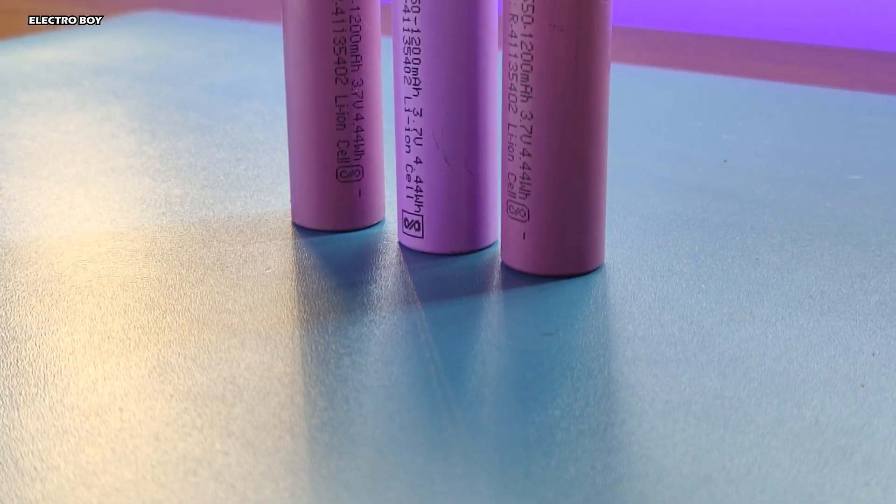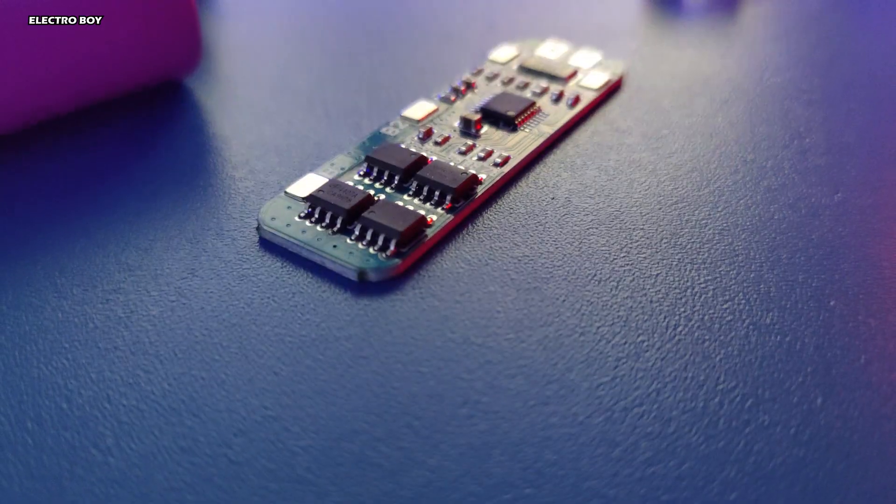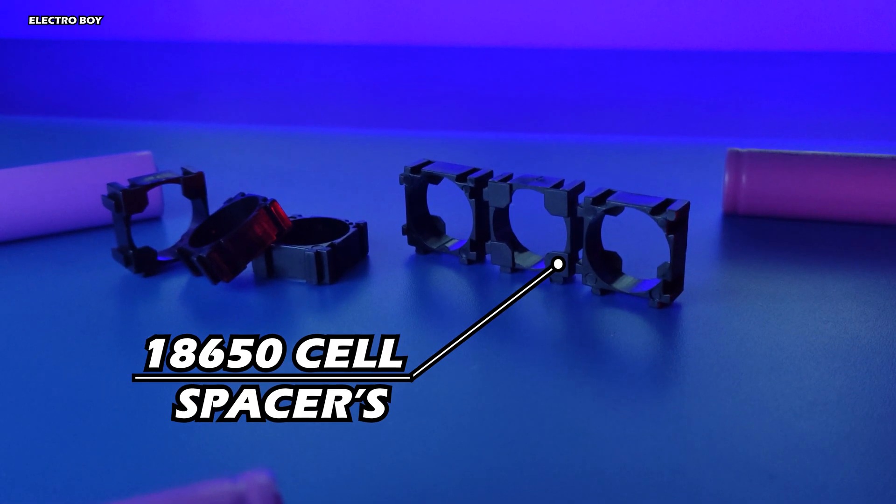So to make this battery pack you'll need three 18650 lithium-ion batteries, a 12V 3S battery management system and some battery spacers.